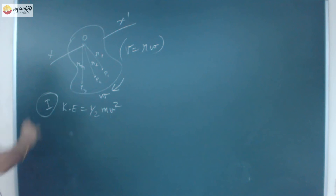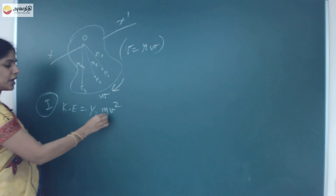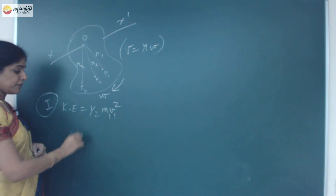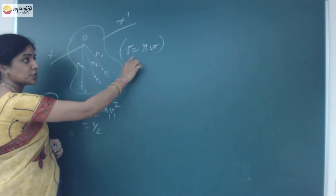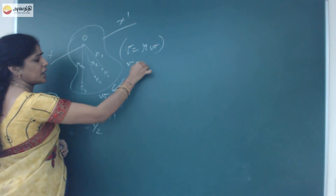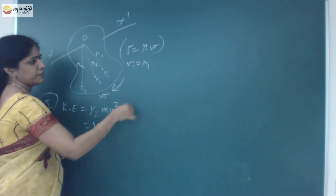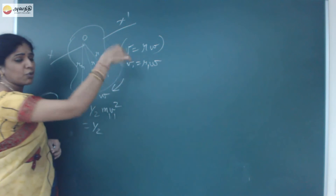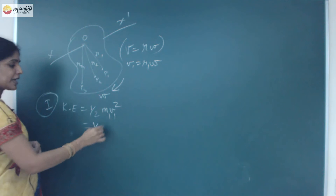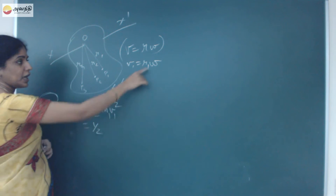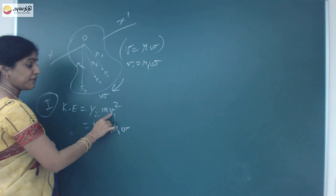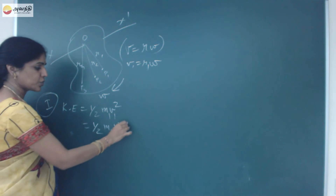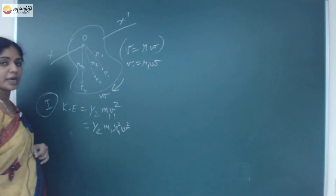For the first particle, the kinetic energy is given by half m1 v1 squared. But we know by the formula v = r omega, so v1 = r1 omega. Substituting, we write v1 as r1 omega, so the kinetic energy of the first particle becomes half m1 r1 squared omega squared.